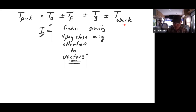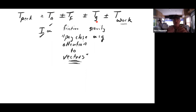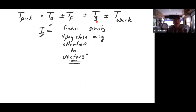What happens a lot of times is people focus on the work term and forget about moving the inertias, or they focus on the main thing - like we've got to move this thing up and down - and get focused on MGH or ½MV² and forget the other things they've got to do along the way. When you're doing motor sizing, you've got to go through each one of these four terms and write the formulas for them. These three aren't that hard - the inertia term is the hard one.